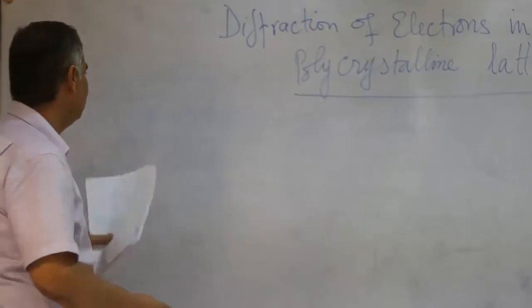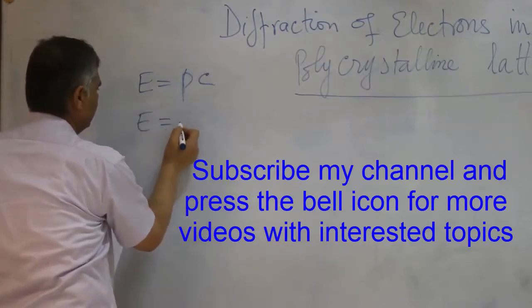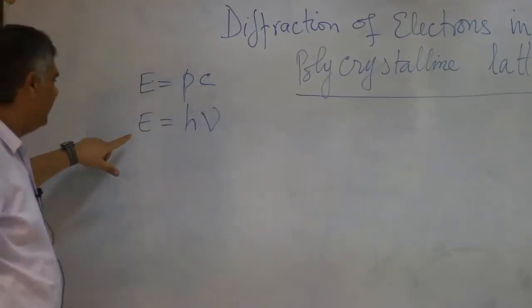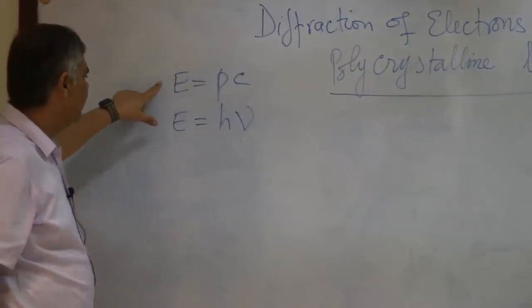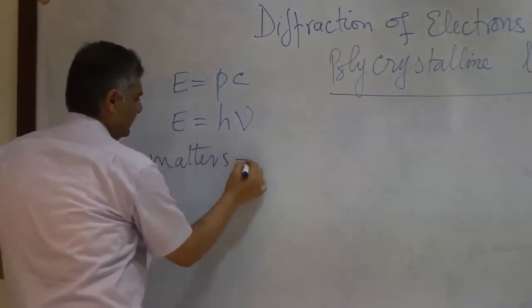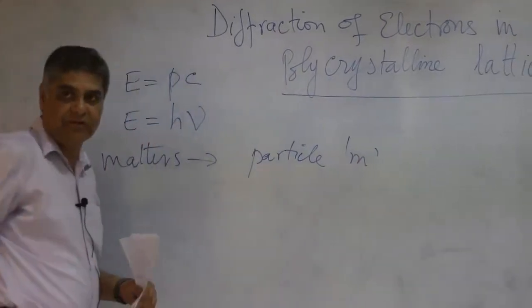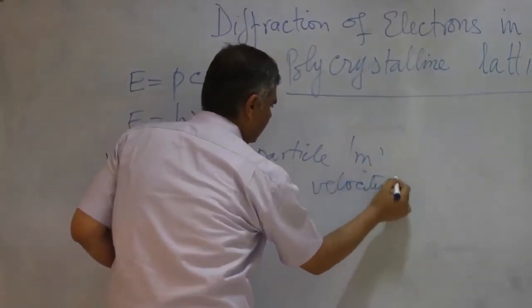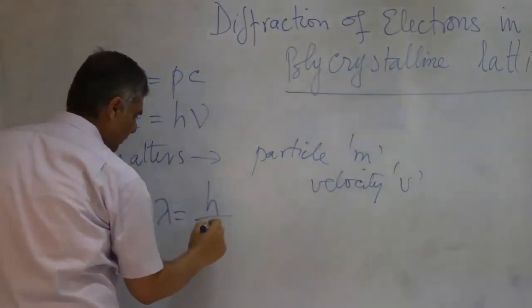The equation for photon energy is given by P into C and is related to the frequency of the photon. This was generalized for matter waves - any particle having mass M, when it moves with velocity V, can have a wavelength given by H over P, where P is the momentum of the particle.